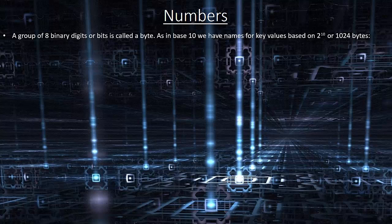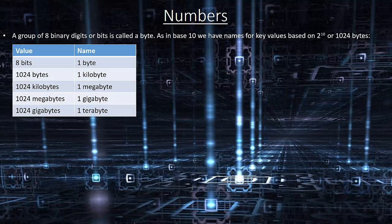Based on powers of 2: 8 bits equals 1 byte; 1024 bytes equals 1 kilobyte; 1024 kilobytes equals 1 megabyte; 1024 megabytes equals 1 gigabyte; 1024 gigabytes equals 1 terabyte.